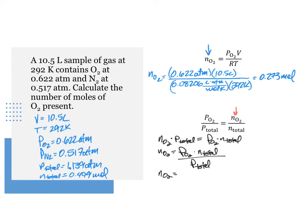To solve for moles of O2, we drop in the values for the partial pressure of O2, 0.622 atm, the total pressure of 1.139 atm, and the total moles of 0.499 moles. Rearranging and solving for moles of O2, we get N sub O2 equals 0.622 atm times 0.499 moles divided by 1.139 atm equals 0.273 moles.